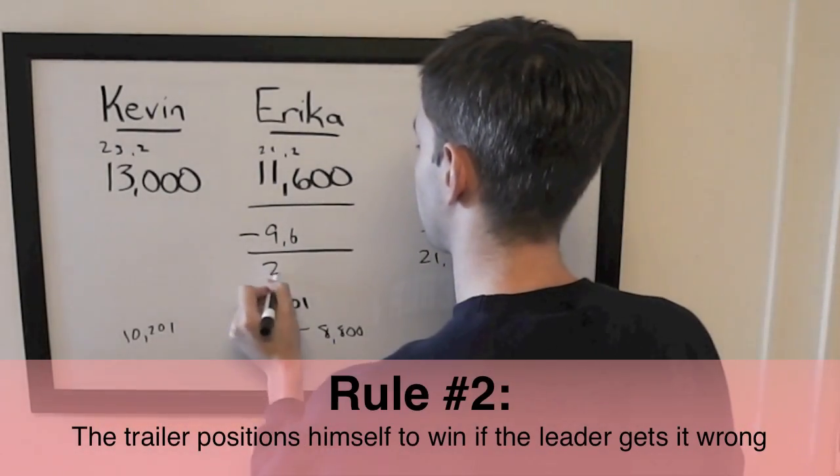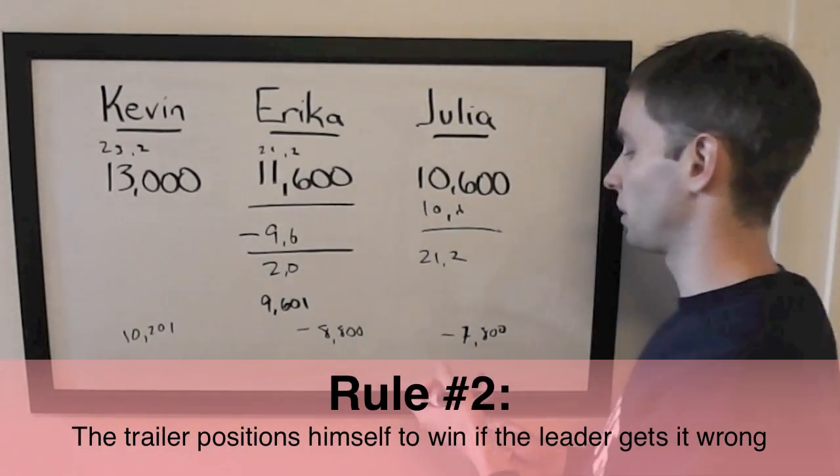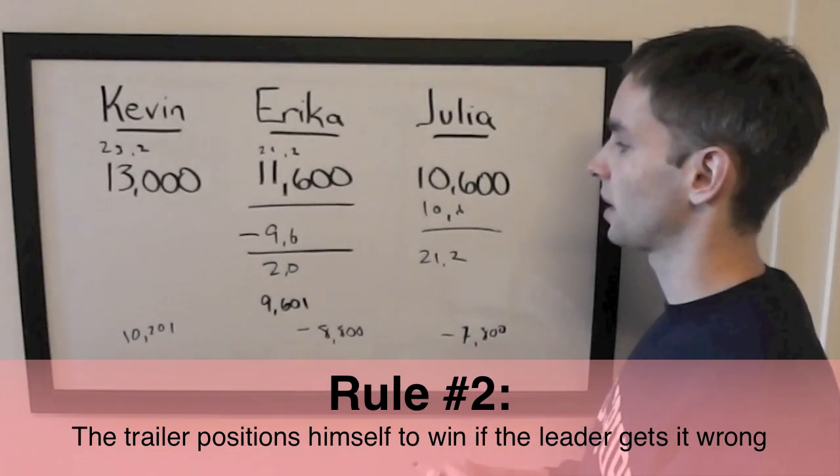If Erica misses with that, she'll have $2,000 left and Julia is already going to stay above Kevin and Erica if they all get it wrong.